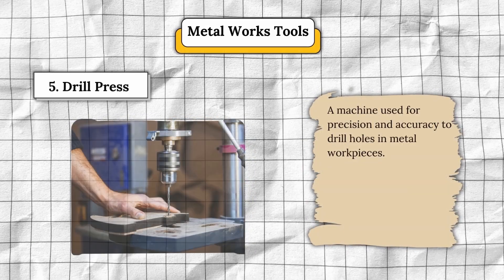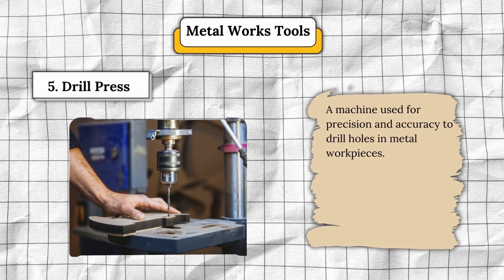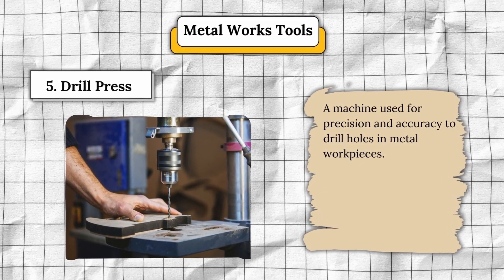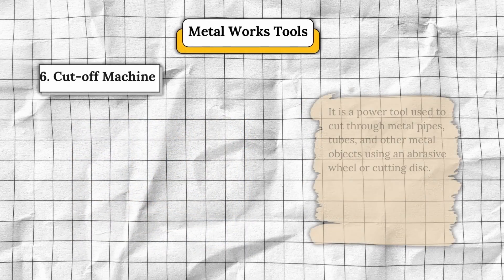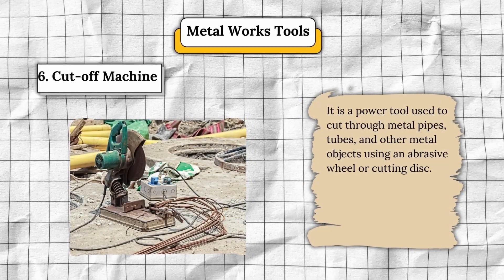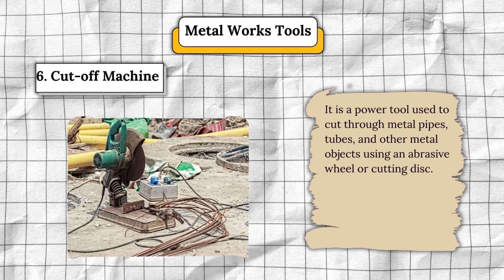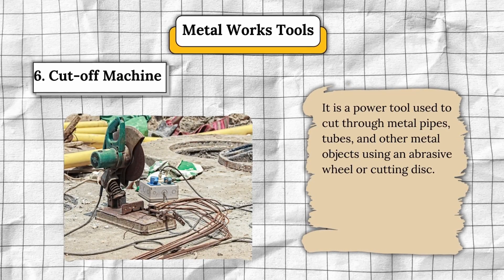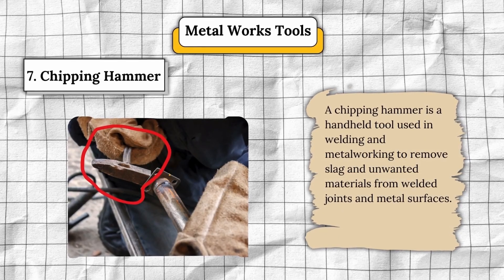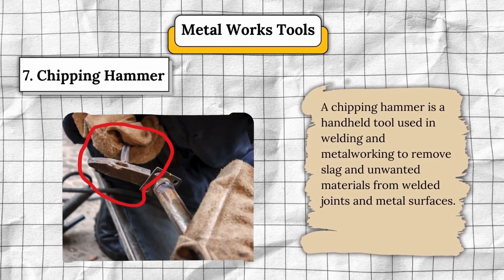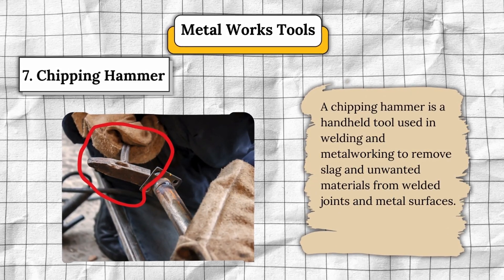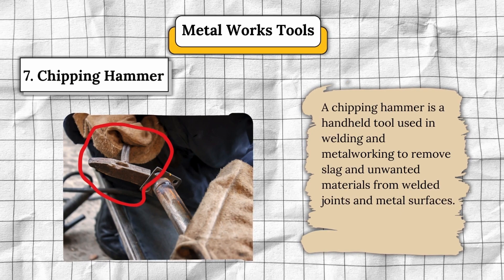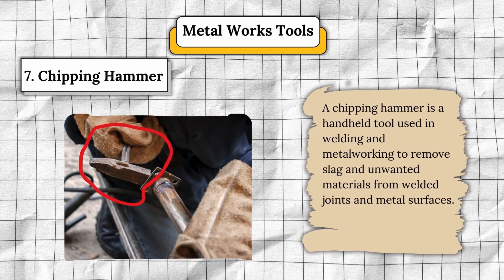Number five, drill press — a machine used for precision and accuracy to drill holes in metalwork pieces. Number six, cut-off machine — a power tool used to cut through metal pipes, tubes, and other metal objects using an abrasive wheel or cutting disc. Number seven, chipping hammer — a handheld tool used in welding and metalworking to remove slag and unwanted materials from welded joints and metal surfaces.